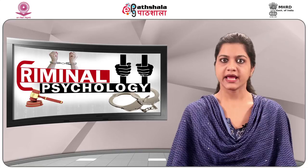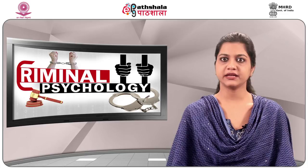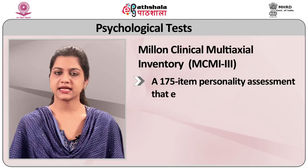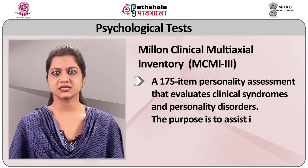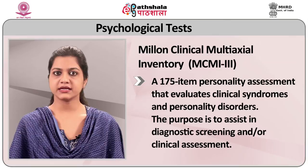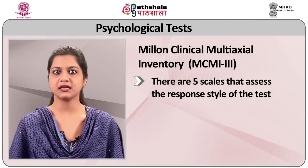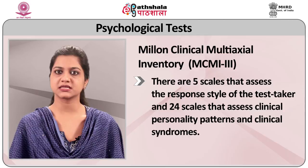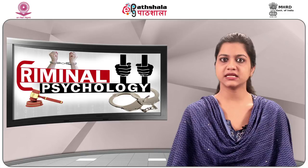MCMI-3: Millon Clinical Multiaxial Inventory 3rd Edition is a 175-item personality assessment that evaluates clinical syndromes and personality disorders. The purpose is to assist diagnostic screening and/or clinical assessment. There are 5 scales that assess the response style of the test taker and 24 scales that assess clinical personality patterns and clinical syndromes. The test is appropriate for individuals 18 years and older who have at least 8th grade reading skills.